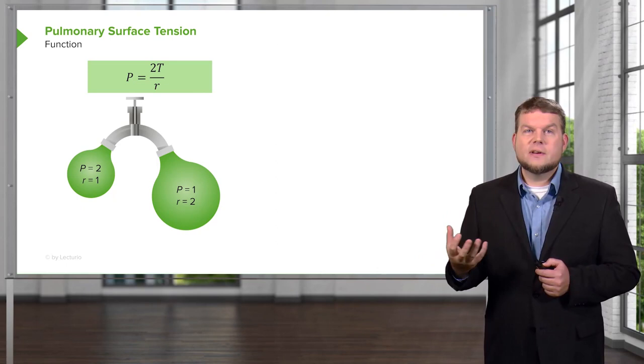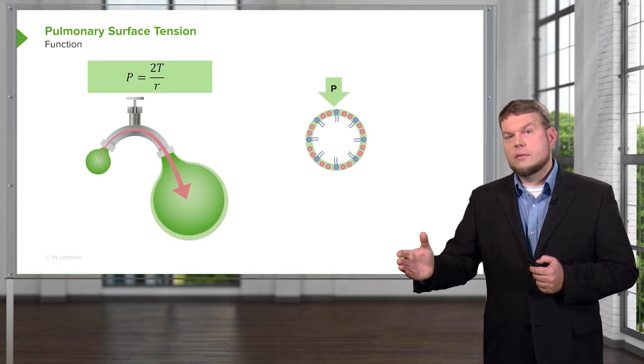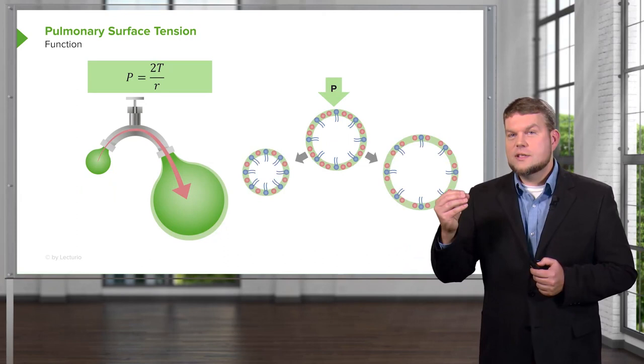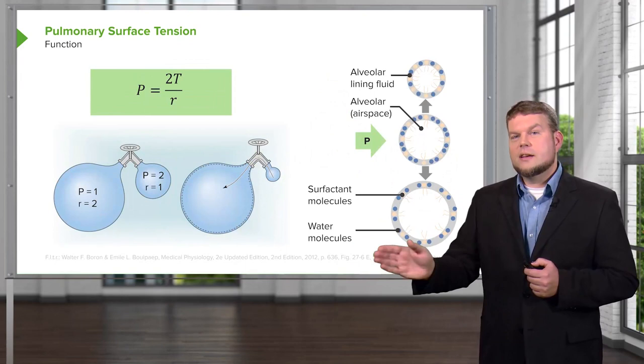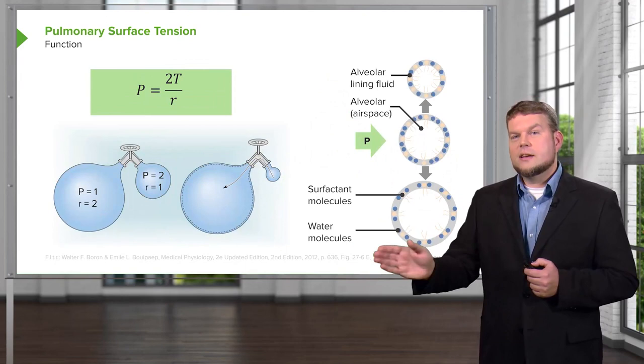What surfactant does is reduce the need to differentiate between different sized air sacs. If pressure comes into an alveoli with surfactant present, it will inflate it no matter if it's small or large. Surfactant allows us to overcome this principle of surface tension because it helps reduce it.